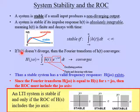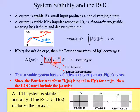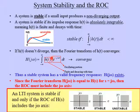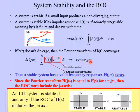Now, if H of T, the impulse response, does not diverge, then the Fourier transform of H of T will converge. Going back to chapter four, this is the Fourier transform integral. The complex exponential is just an oscillating portion. If H of T is finite and decaying with time — like the blue curve — then this integral is well-behaved and we can evaluate it; the integral converges. In other words, the Fourier transform H of j-omega exists.